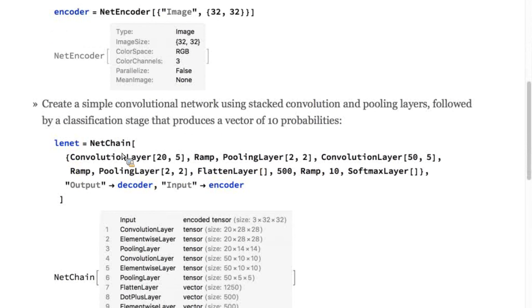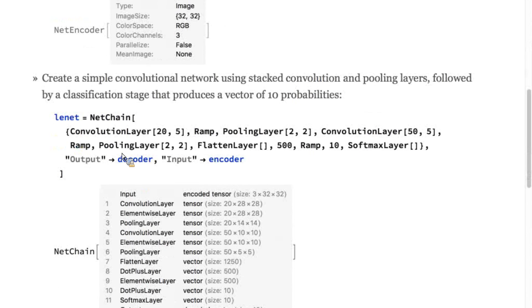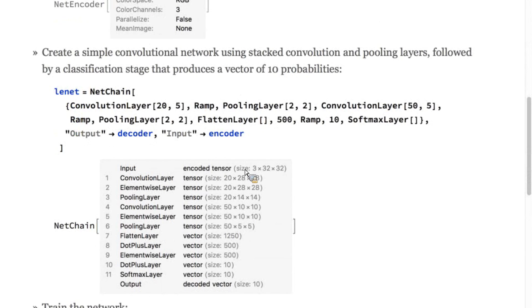Then, we'll set up the network. We'll use two stacks, each containing a convolution, a non-linearity, and a pooling layer. At that point, we'll have a smaller tensor. As you can see, we started off with a 3 by 32 by 32 three tensor, and then after all these convolutions and poolings, we end up with a much smaller 50 by 5 by 5 tensor.